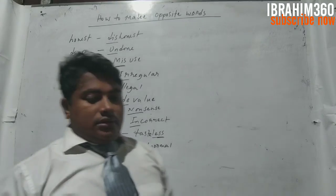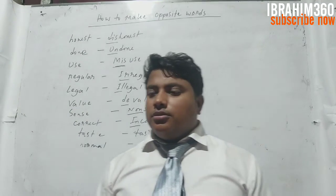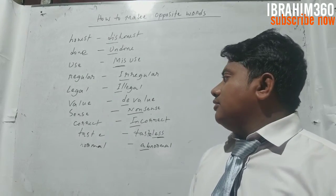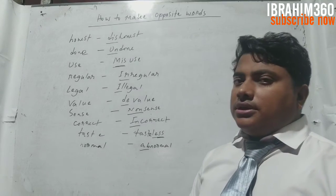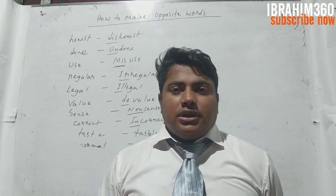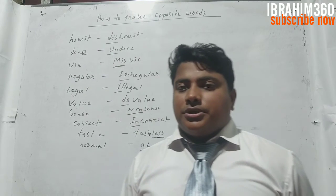Tachara amra suffix prefix chara onno babay word change korte paree, but it's very difficult for us. Asha kori ekhan theke amader opposite word gathan korte aar koshto hobena. Amra easily synonym teke antonym's word gathan korte paree.